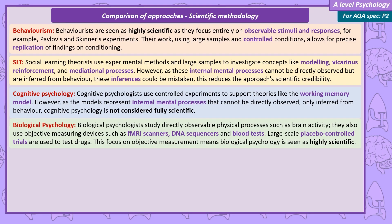Biological psychologists study directly observable physical processes such as brain activity, and use objective measuring devices such as fMRI scanners, DNA sequencing, and blood tests to measure hormone levels. Large-scale placebo-controlled trials are also used to test drugs that alter brain chemistry. This focus on objective measurement means biological psychology is seen as highly scientific.